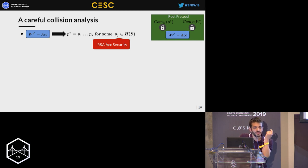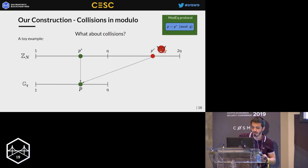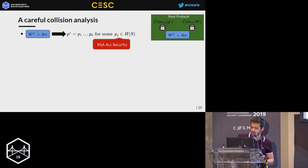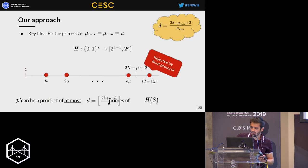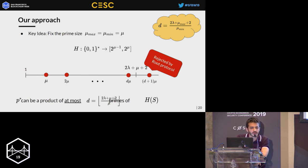The hash itself proves a range — since we have fixed the hash output to be of a specific size, the output is of a specific range. If you prove that something is the output of the hash, you already have a range proof implicitly, though it is more inefficient than using Bulletproof range proofs directly.